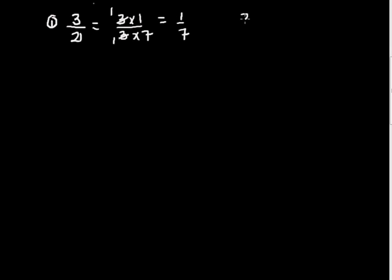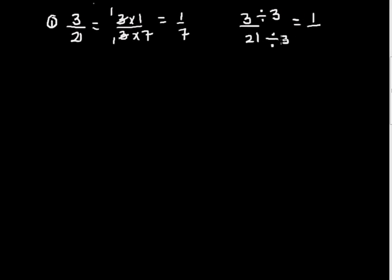You could also approach it like this: 3 divided by 21 — divide the numerator by 3 and the denominator by 3. So 3 divided by 3 is 1, and 21 divided by 3 is 7.